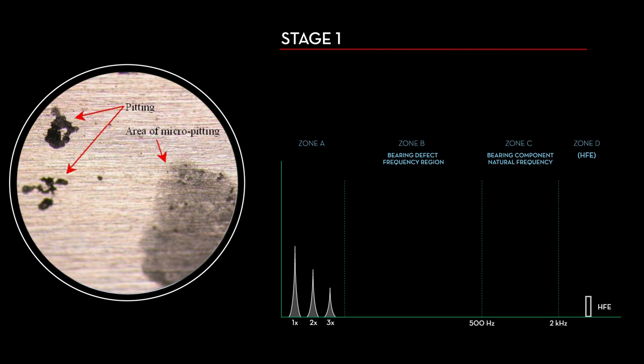Stage 1 is still considered normal operation. Defects appear around 20,000 to 60,000 Hz. This stage may also indicate a lack of lubrication between the races and rolling elements.